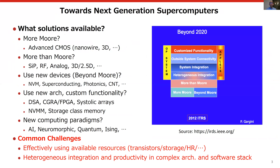We have several solutions to tackle this problem. For example, we may use more NVM and beyond NVM technologies. Also, we can use new architectures and custom functionalities like domain-specific architectures, CGRA or FPGA, systolic arrays, non-volatile main memories, storage class memories, and so forth.